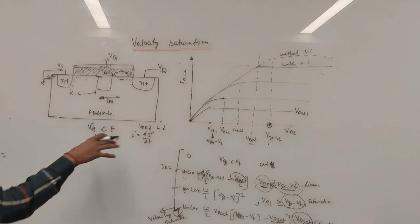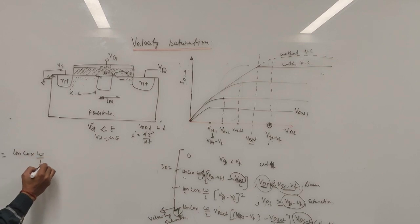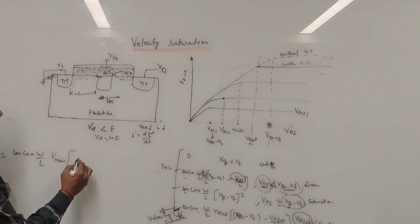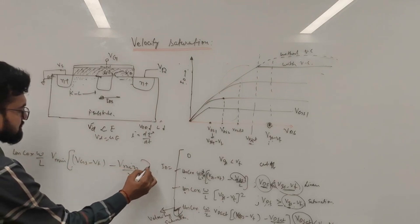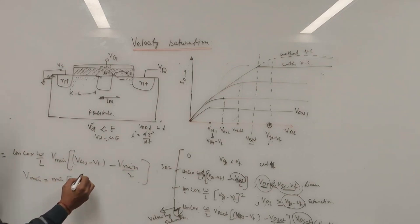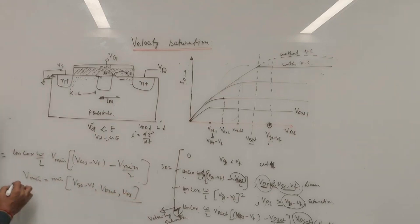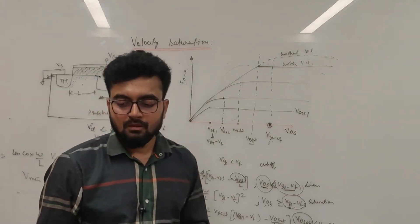Therefore, we can write one unified drain current equation: I_D = mu_n C_ox (W/L) times V_min times (VGS minus VT minus V_min / 2), where V_min is the minimum of VGS minus VT, VDSat, and VDS. This single equation takes care of all operating conditions.